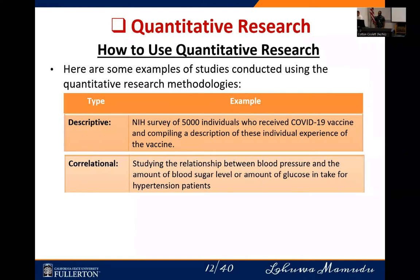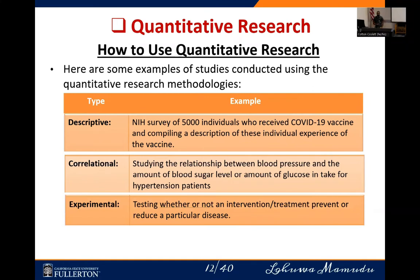For correlational research, you might study the relationship between blood pressure and the amount of blood sugar or glucose intake for hypertension patients. This allows you to establish whether there's any relationship between blood pressure level and glucose level leading to hypertension. For experimental research, an example is testing whether an intervention or treatment prevents or reduces disease — like the COVID-19 vaccine clinical trials by Johnson & Johnson, testing whether the vaccine could prevent COVID-19 diagnosis.